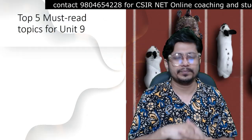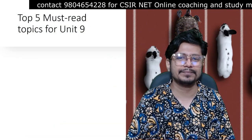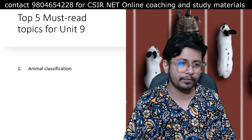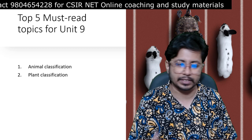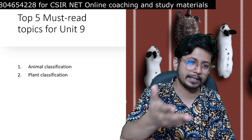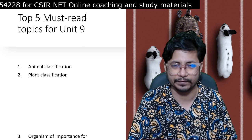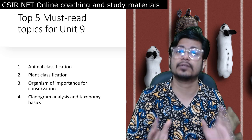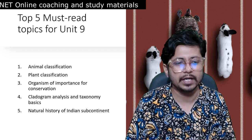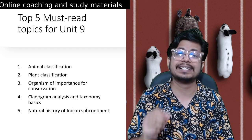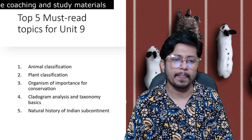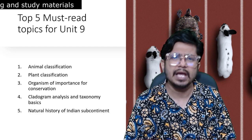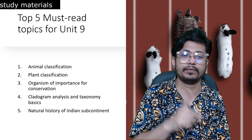The five most important must-read topics from Unit 9 are: first, animal classification; second, plant classification — choose based on your background, zoology or botany; third, organisms of importance for conservation; fourth, cladogram analysis and taxonomy basics; and fifth, natural history of the Indian subcontinent. More questions come from animal classification, but there are occasional questions from plant classification and natural history of the Indian subcontinent as well.